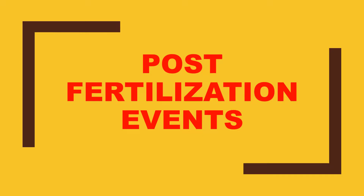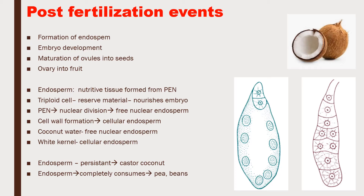Now let us have a look at these events. The post-fertilization events include the formation of endosperm and embryo development, maturation of ovules into seeds and ovaries into fruit. These four are the post-fertilization changes which take place in the flower.